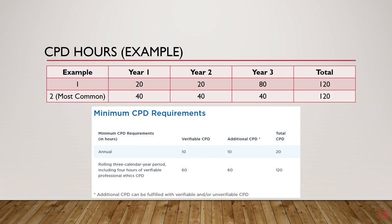Here's an example of how your CPD hours can look over three years. In the first example, the person earned 20 hours in year one — normally half verifiable and half unverifiable — 20 in year two, and 80 in year three. Most commonly, people would do the second example, which is earning 40 hours every single year, with 20 verifiable and 20 unverifiable, for a total of 120 hours over three years.